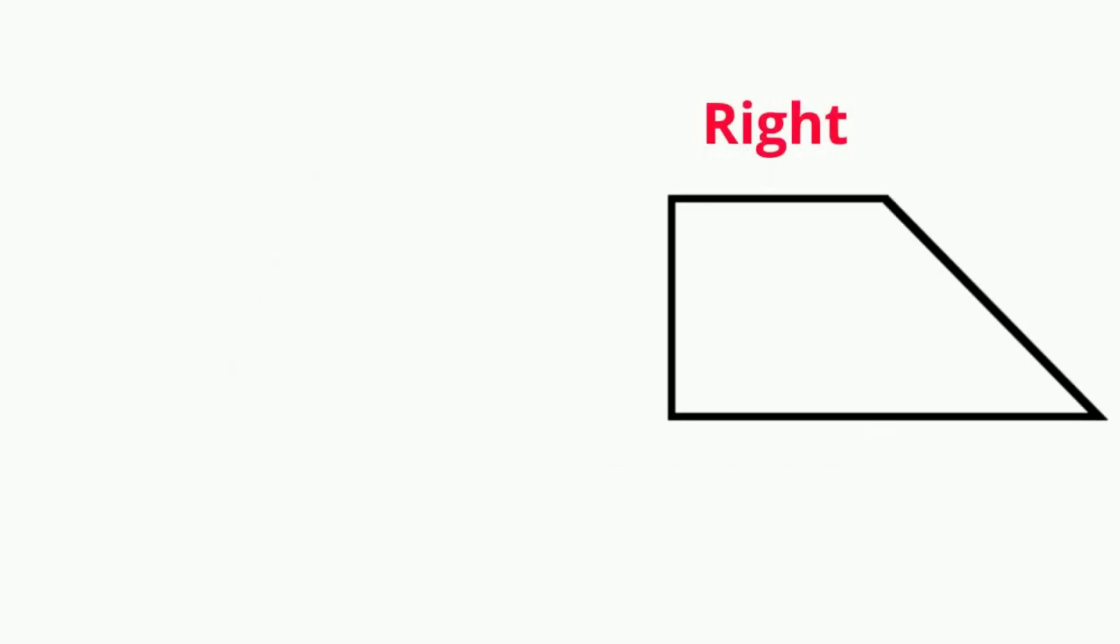Let's take a look at two types of trapezoids. A right trapezoid has two right angles that are next to each other. This is called consecutive.